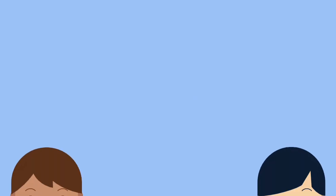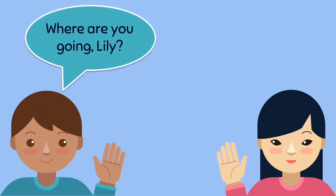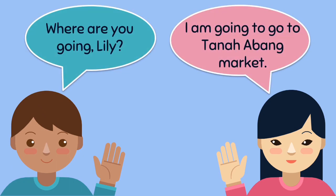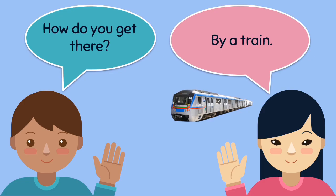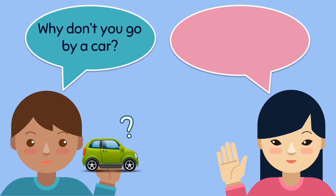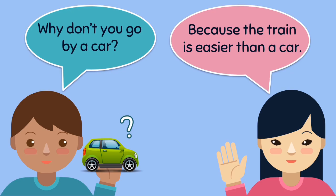Conversation. — Where are you going, Lily? — I'm going to go to Tanah Abang Market. — How do you get there? — By train. — Why don't you go by car? — Because the train is easier than a car.